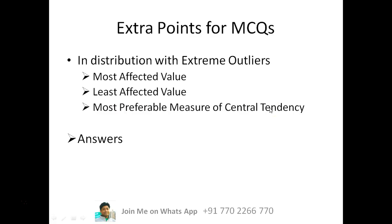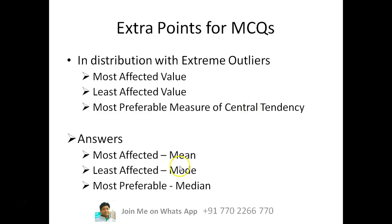And the most preferable measure of central tendency will be median in such cases. So the answers are: most affected value is mean, least affected value is mode, and the most preferable value is median because it is least affected and gives the best result when it comes to distribution with outliers.